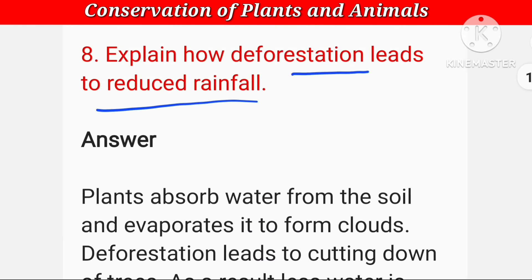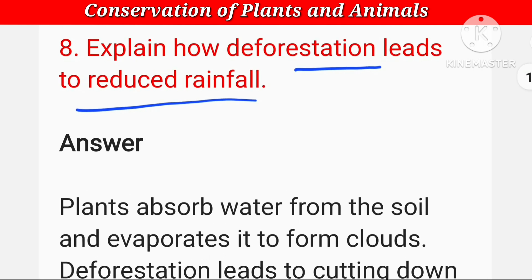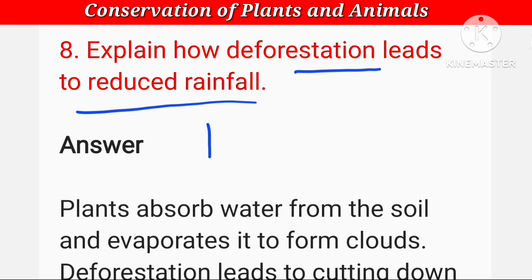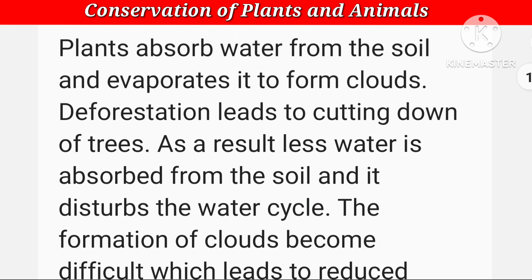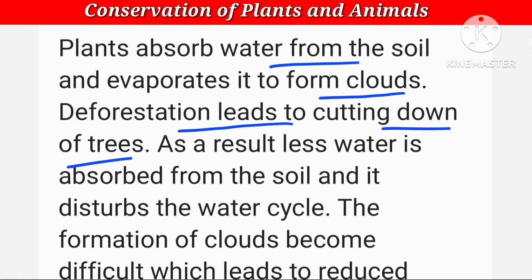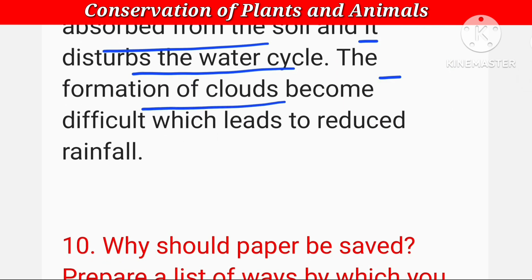Explain how deforestation leads to reduced rainfall। Plants absorb water from the soil and evaporate it to form clouds। Deforestation leads to cutting down of trees — as a result, less water is absorbed from the soil and it disturbs the water cycle। The formation of clouds becomes difficult, which leads to reduced rainfall।